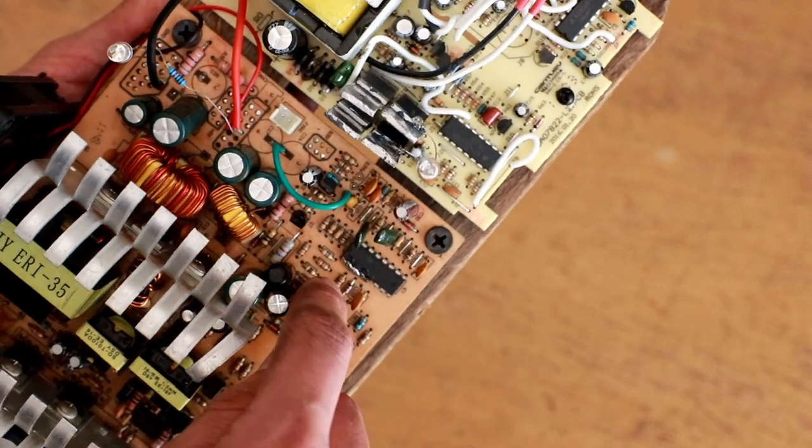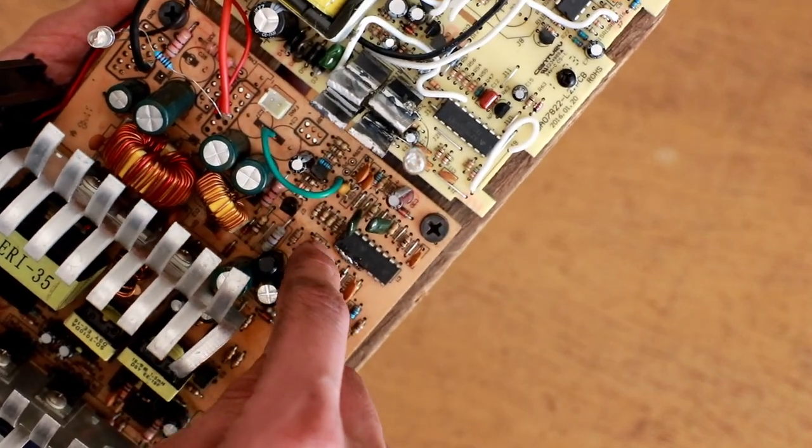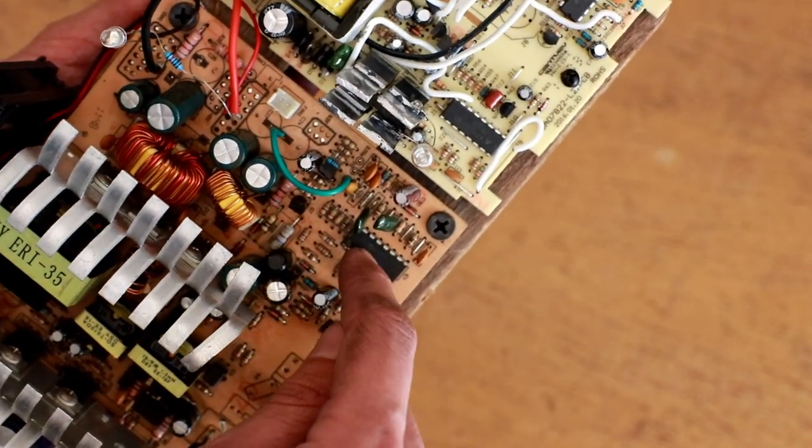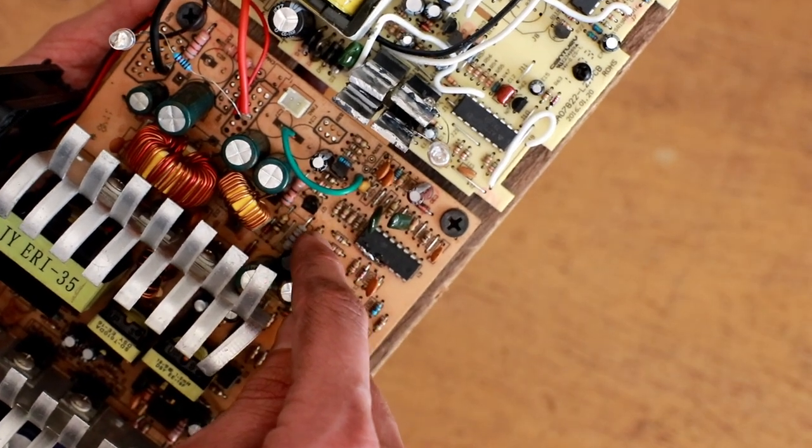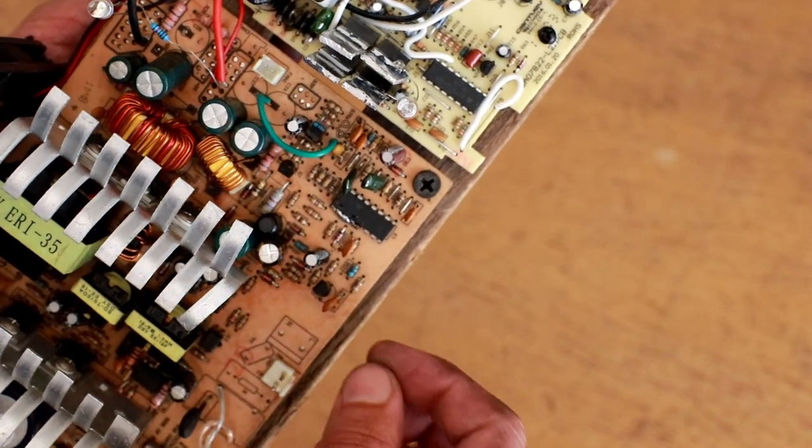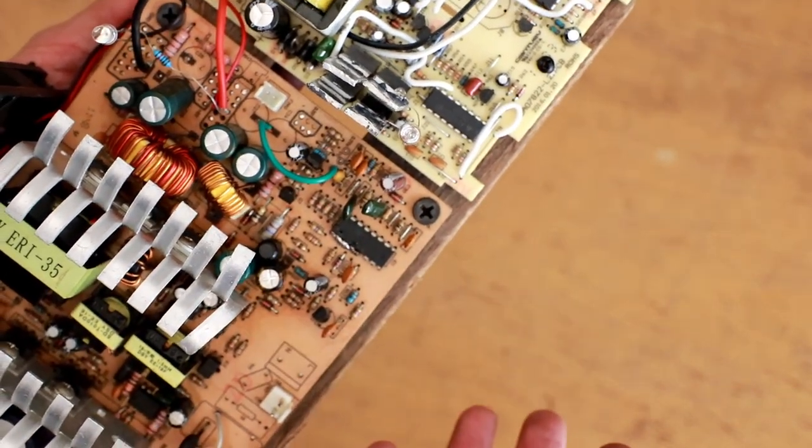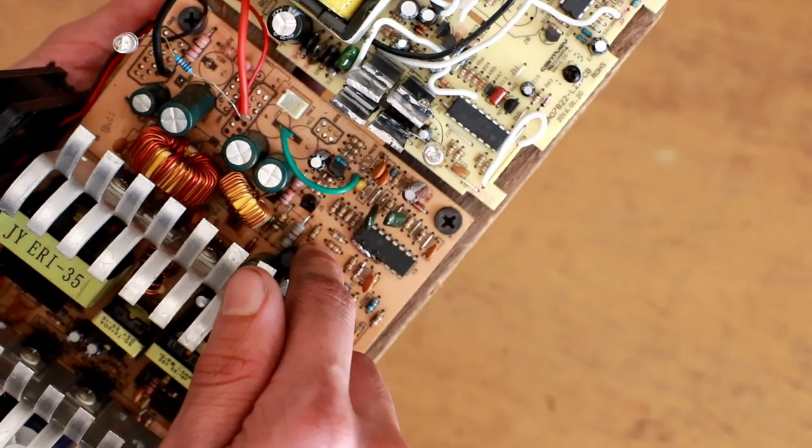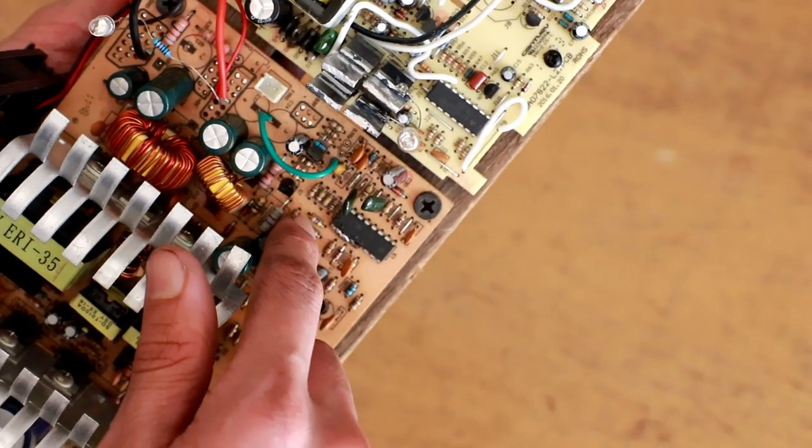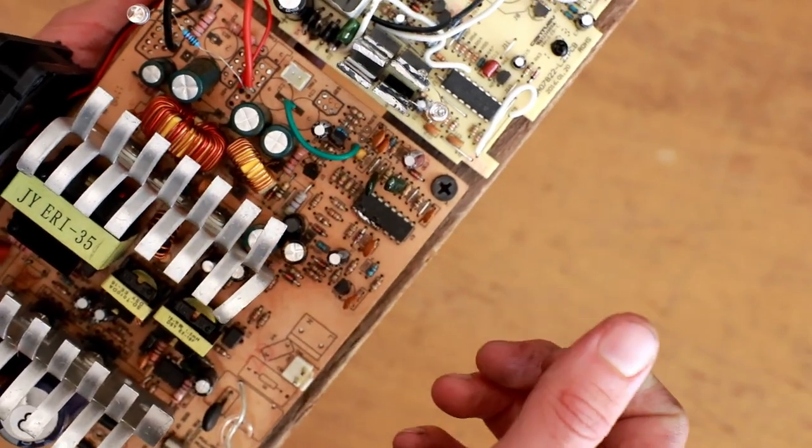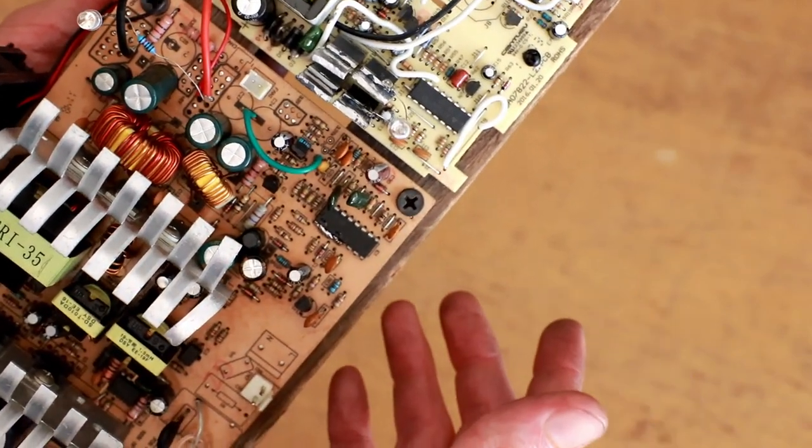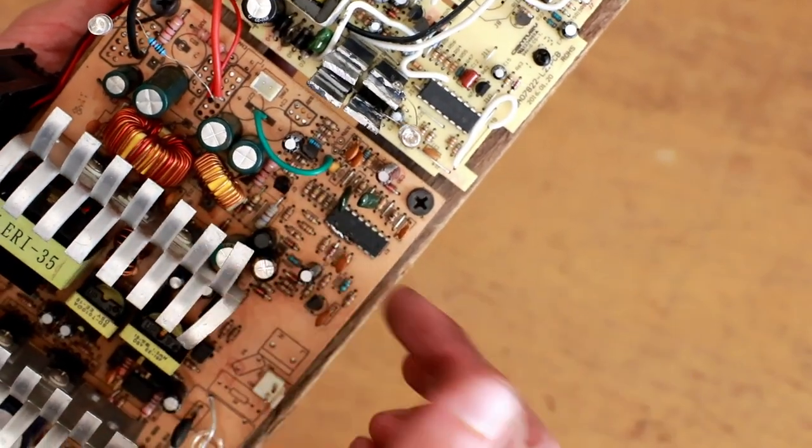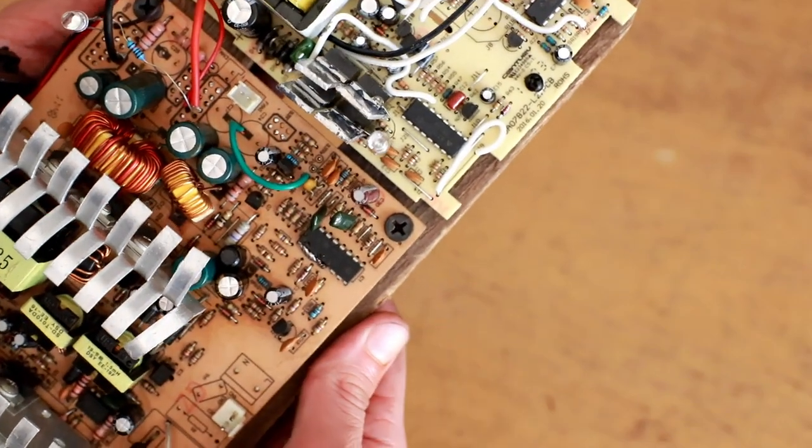This would normally be quite problematic because if these are connected via direct lines to the 3.3, 5, and 12-volt rails, it would of course short those rails out and not work. But I found out these are actually connected via resistors to those lines, which means shorting them to ground just results in a very small amount of added load to those rails, heats up the resistors a bit, but it doesn't actually cause any catastrophic problems.